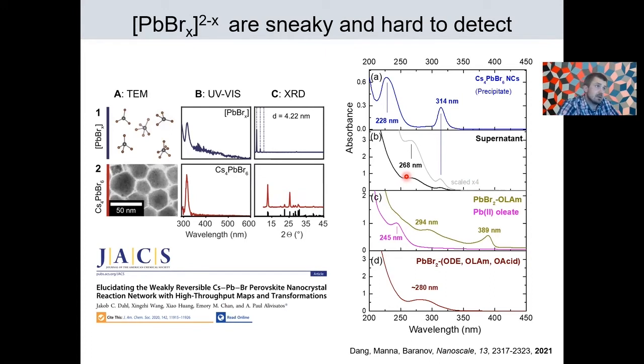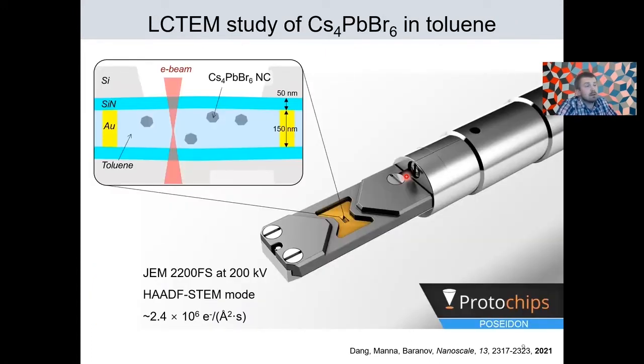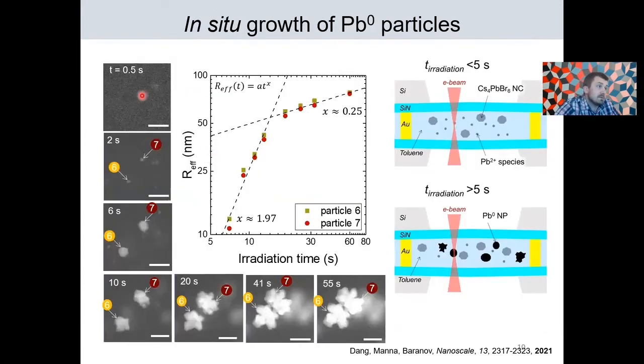And their presence has interesting consequences. For example, we conducted liquid cell electron microscopy study on these particles in toluene dispersion to test their resistance under electron beam. And what we saw in those experiments is that when we focus on the area where there are no 0D particles, after some seconds, we start to observe formation of rounded and even dendritic particles that by elemental composition turn out to be metallic lead. So what happens here is that this excess of lead species is being reduced under electron beam and produces metal particles.